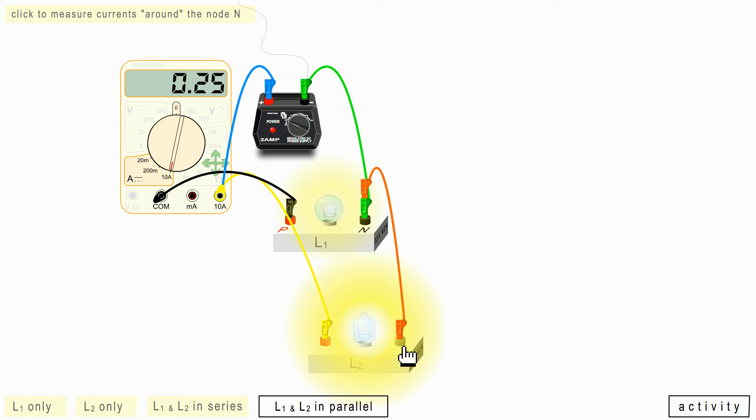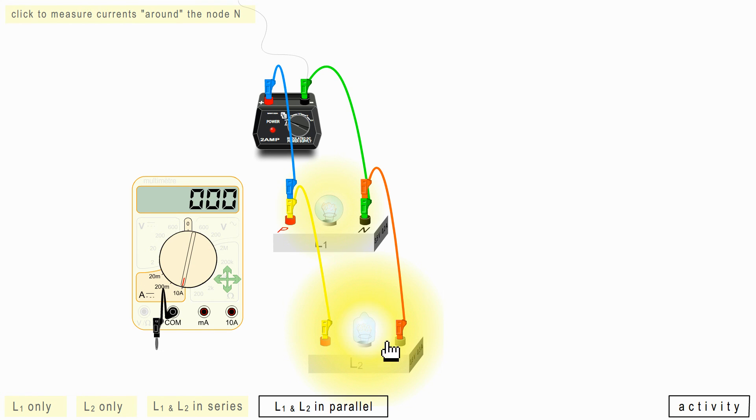Next, measure the intensity of the current in the L2 lamp. It's about connecting so that you don't have the minus sign. Here I find 0.34 amps, which brings me to the conclusion.